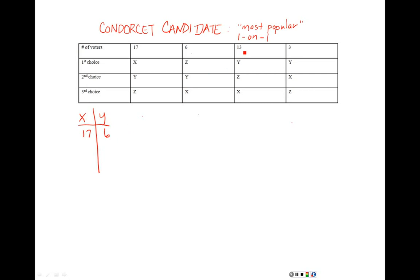In the next column, Y is in first place and X is in third, so Y wins those 13 votes. And in the following column, Y is ranked higher than X, so Y wins those votes too. When I look at just X versus Y: X wins 17 votes from the first column, but Y wins all the other votes — 19 plus 3, which is 22. So in this one-on-one matchup, Y is the more popular candidate, even though X is the plurality winner with 17 votes compared to Y's 16.